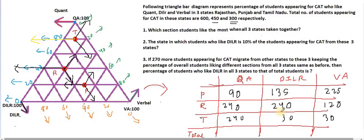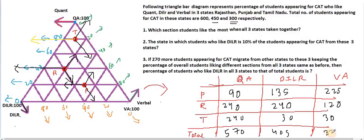Now our table is complete, but let's also calculate the totals. Quant total: 240 plus 240 plus 90 is 570. DILR total: 240 plus 30 plus 135 is 405. Verbal total: 120 plus 30 plus 225 is 375. Now the table is complete and we can start doing the questions.